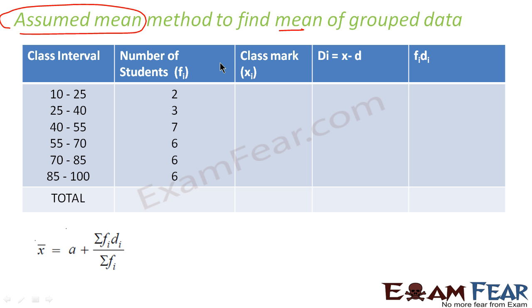The second question that comes to our mind is when we have direct mean method and that is very simple, why do we need assumed mean method? The answer is sometimes in real life the data is huge and it's difficult to calculate because you have millions of data.